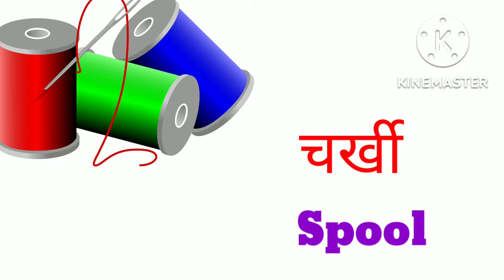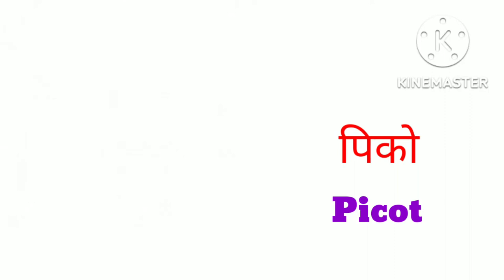Next, the thread spool — 'joh dhagi ki charki hoti hai usko kaengi spool ya phir reel.' And 'piko' — we call it 'piko' only.